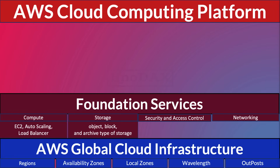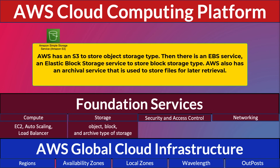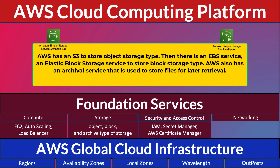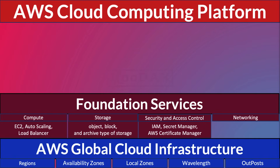Moving on to the AWS Storage category: AWS has different types of storage services. AWS has S3 service for object storage, and EBS — Elastic Block Storage — for block storage. For example, when files are kept on disk, the operating system stores them in blocks. AWS also has an archival service that stores files for later retrieval.